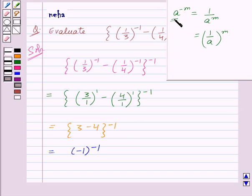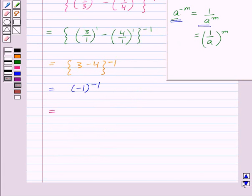Now again using the result that a to the power minus m equals 1 upon a to the power m, we get 1 upon minus 1 to the power 1, which equals minus 1.